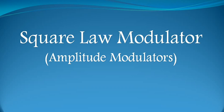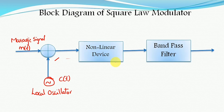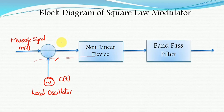Let us see the block diagram of a square law modulator. This block diagram consists of mainly three blocks: the first block is an adder block, the second is a non-linear device, and the third block is a band pass filter. The message signal and the carrier signal generated from the local oscillator are directly applied to the adder block.